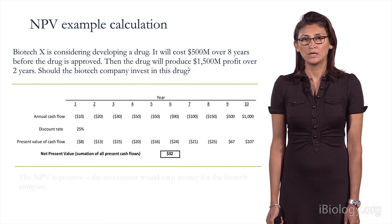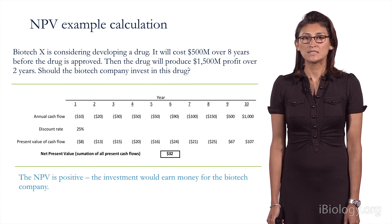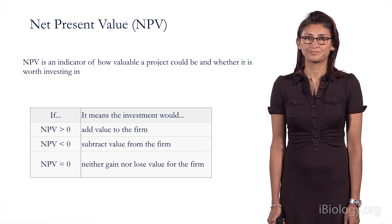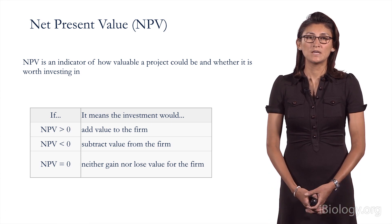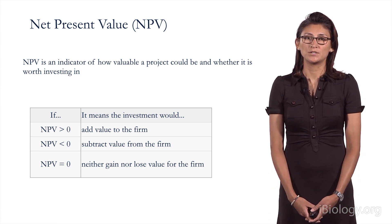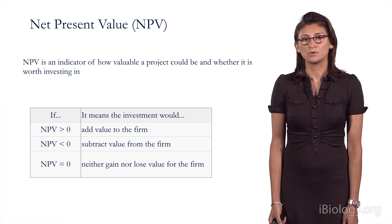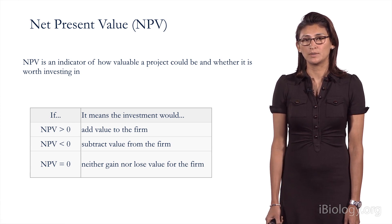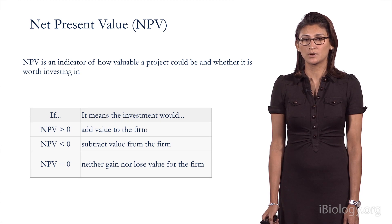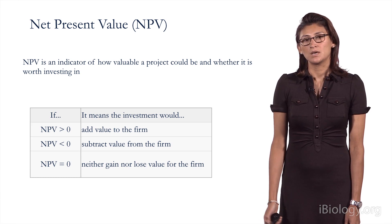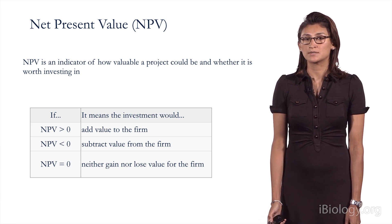What does that $32 million mean? It means that the NPV is positive and the investment would earn money for the biotech company. The NPV is an indicator of how valuable a project can be and whether it's worth investing in. If the NPV is greater than zero, the investment would add value to the firm. If the NPV is less than zero, it would subtract value from the firm. If it's zero, it's neither a gain nor a loss.